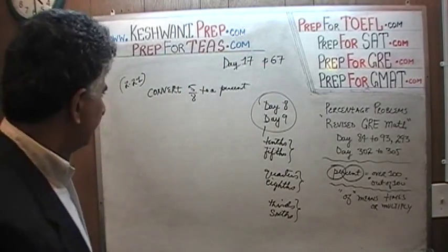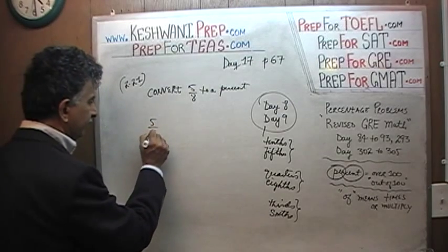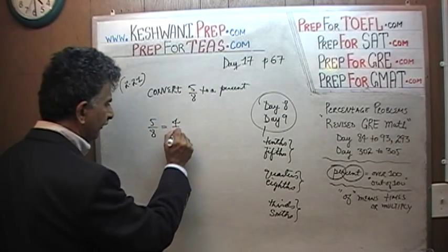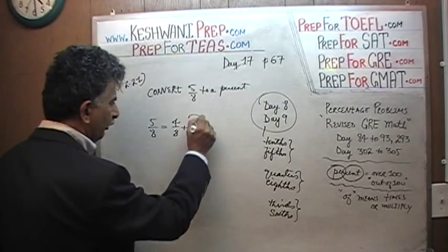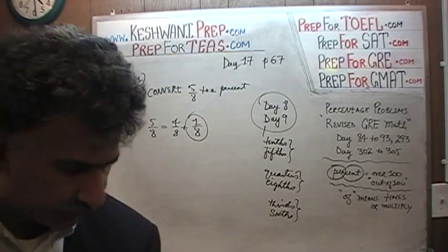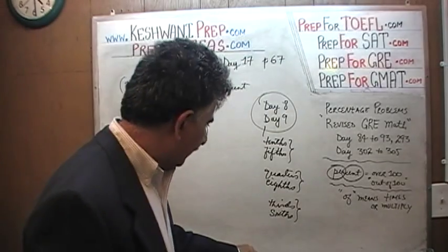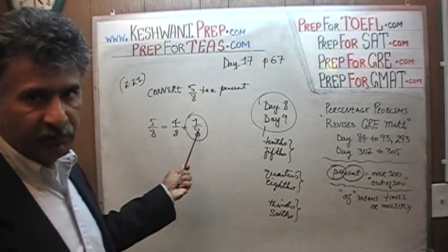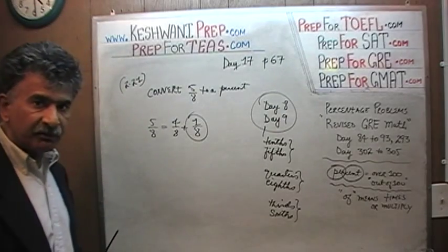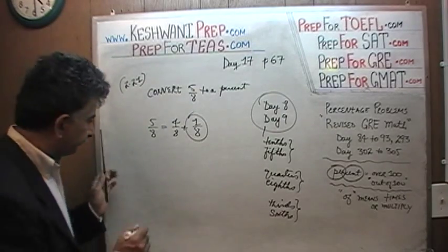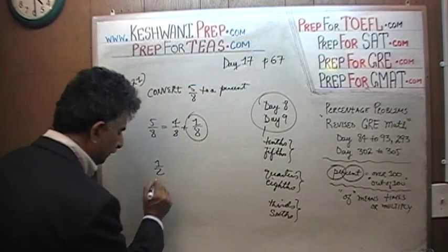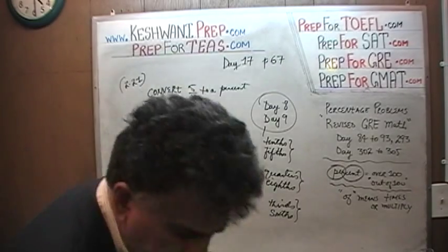We learned that 5/8 can be written as 4/8 plus an eighth. What we learned was, when we dealt with the eighth, that was the very first one — obviously, 1/8. And how much is 1/8 in percentage? Let's find out, shall we?